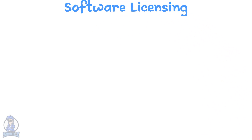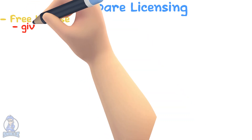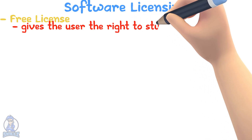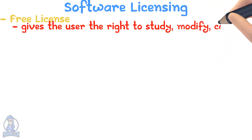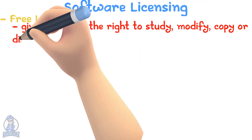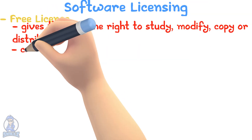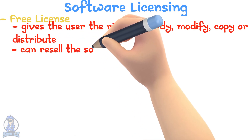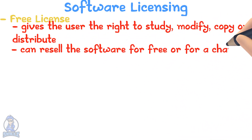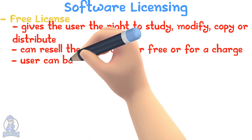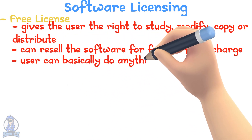There are three types of software licensing. The free license gives the user the right to study, modify, copy, or distribute the software. This means the user can resell the software for free or for a charge. The 'free' in free license means the user can do anything they want with it.